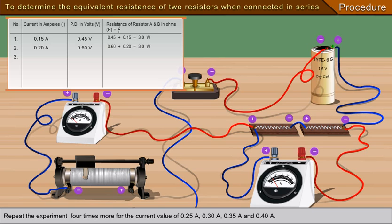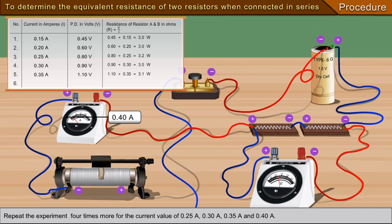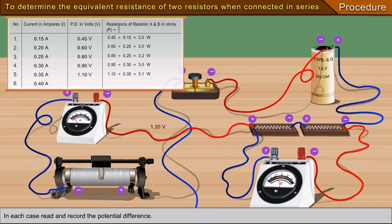Repeat the experiment four more times for the current values of 0.25 ampere, 0.30 ampere, 0.35 ampere, and 0.40 ampere. In each case, read and record the potential difference.